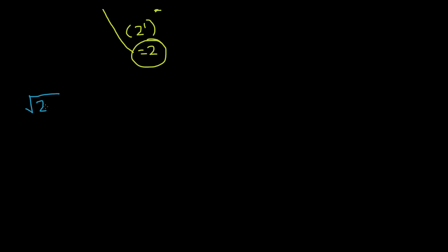This time, let's do the number 24 — so the square root of 24. Remember the first step: since we know that the radical is equal to 1 half, we can write this as 24 to the power of 1 half. Step 2: find the factors of 24.